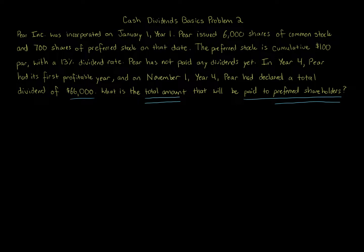We're focusing on preferred shareholders. The question could ask for preferred or for common. Remember: if a corporation has preferred shareholders, they also have common. Common is a requirement; preferred is preferred to common, so preferred is not necessarily required. Let's go through the information. Pair Inc. was incorporated January 1st, year one, with 6,000 shares of common and 700 shares of preferred. We're just focusing on the preferred here, though you could calculate for common as well.